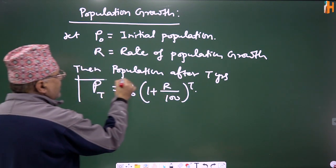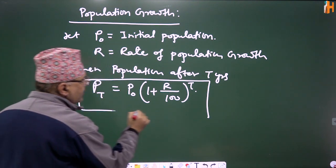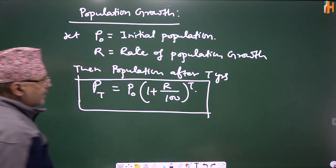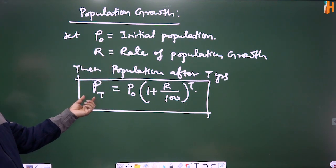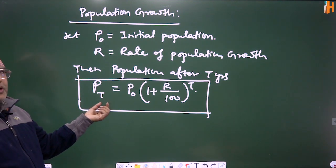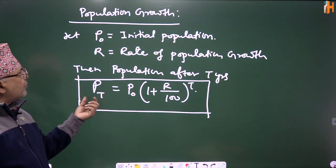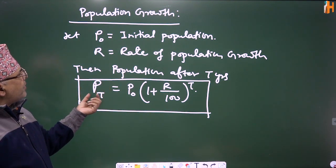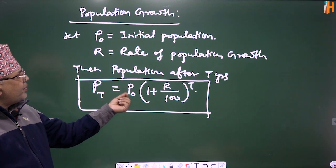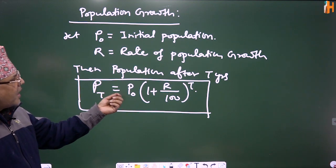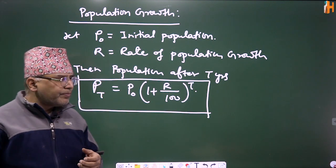Population after how many years? Population after t years is given by the formula, denoted by Pt. Pt equals P0, the initial population, times 1 plus R by 100 to the power t.